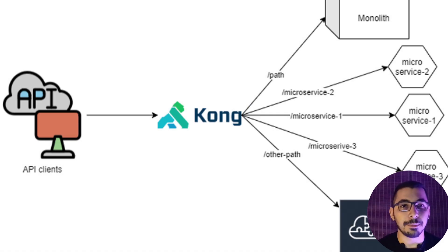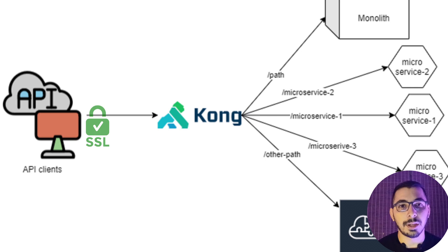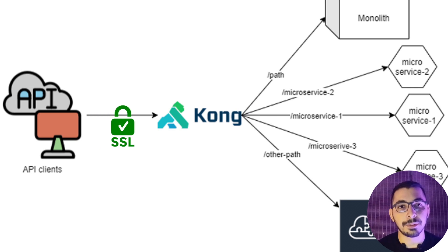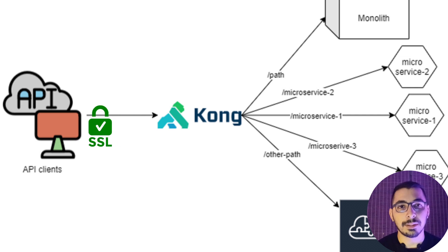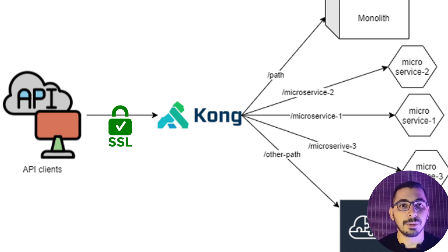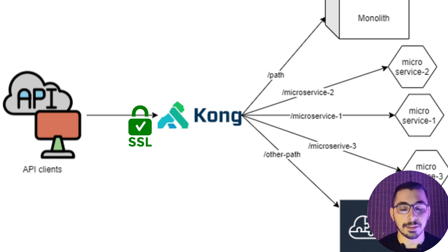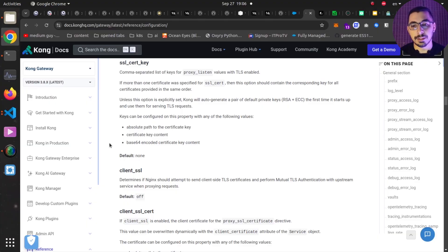Hello and what's up guys, Medium Guy here. In this video I'm going to generate a self-signed certificate and pass it to Kong API Gateway, so as a result Kong API Gateway will be served behind HTTPS.